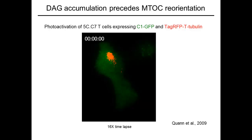The T-cell is spread on one of these photoactivatable surfaces and we are imaging it from below. We are using TIRF microscopy in this experiment to monitor the DAG biosensor, so the green signal is really just the footprint the T-cell makes on the glass. The cell will be irradiated in this region — a circle will appear when that happens. Photoactivation of the TCR in this region induces the localized accumulation of DAG in the plasma membrane, followed by movement of the MTOC to that location.